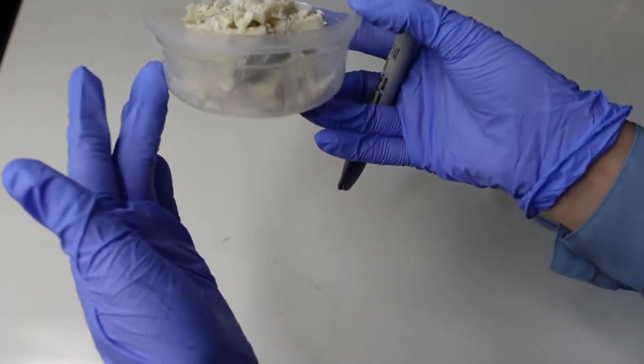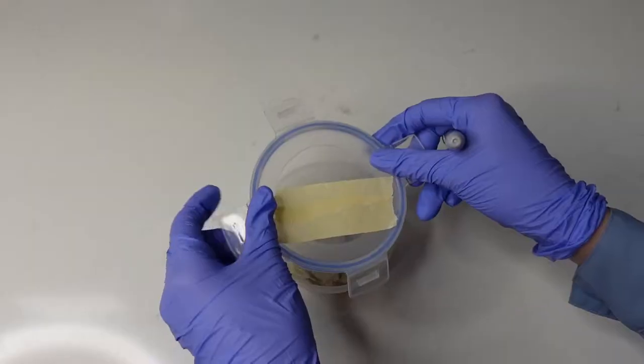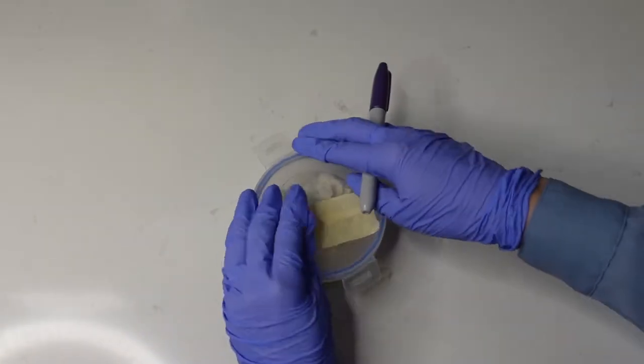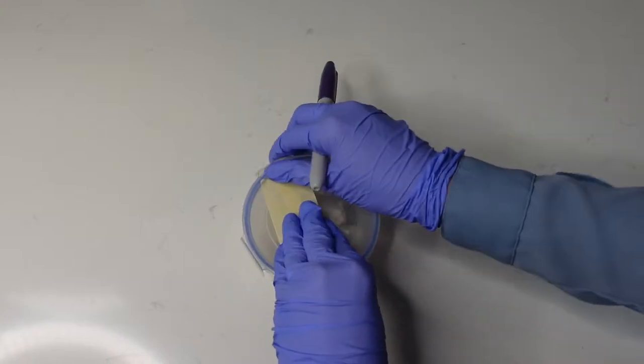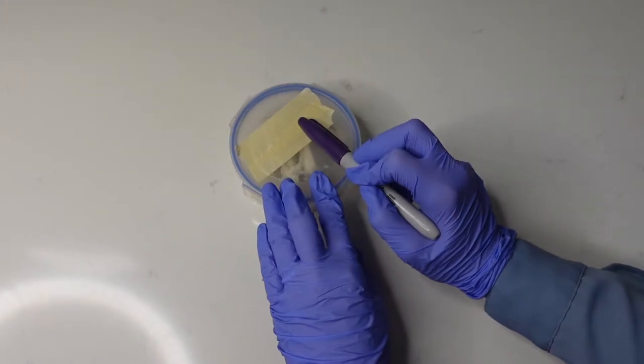At this point you can see all of this extra wax would have gone to waste normally had we not done this. So at this point I'm going to put the lid on, and because I'm using this reusable container I put on some masking tape to write the name of the scent.